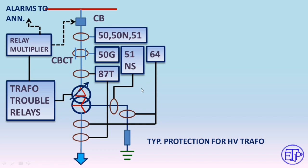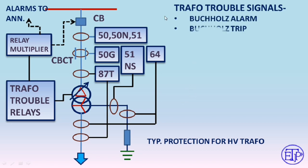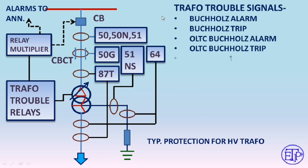The transformer is protected by four earth fault relays because earth fault is the most severe fault for machines with core material — similar to motor protection where two earth fault relays are used. For each winding of the transformer, two earth fault protections are applied: one primary and one backup. This comprehensive arrangement handles all transformer trouble signals.